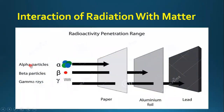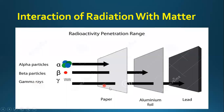Comparing the penetrating power: a simple sheet of paper can stop alpha particles because their mass is so large they cannot penetrate it. Beta particles, being electrons, pass easily through paper but are stopped by an aluminum foil. Gamma rays, being highly energetic, pass through both paper and aluminum foil and require a lead sheet to stop them.